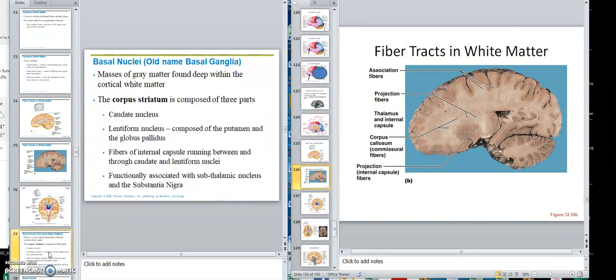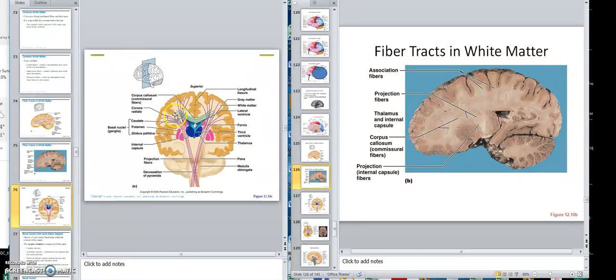So here, actually here it comes now. Masses of gray matter found deep within the cortical white. The corpus striatum, and the reason they call it the body of striatum, is because how this goes through and stripes it up. How this goes through and stripes it up here.